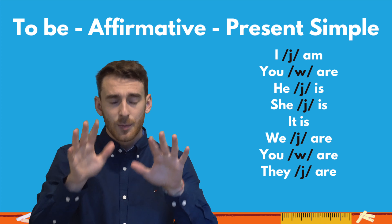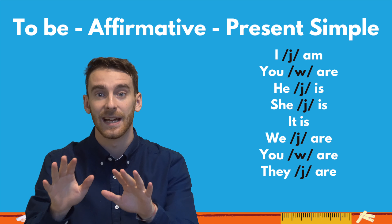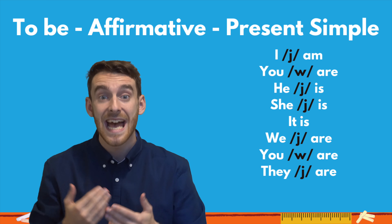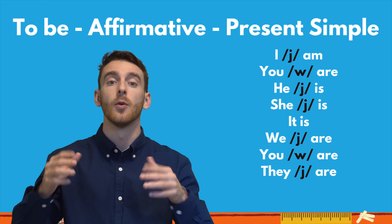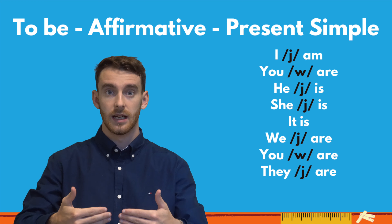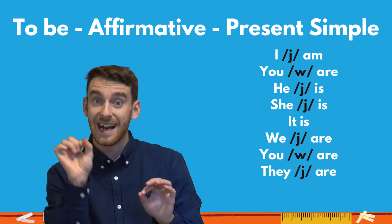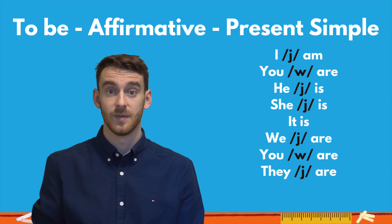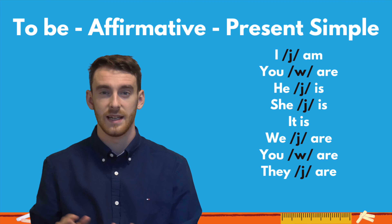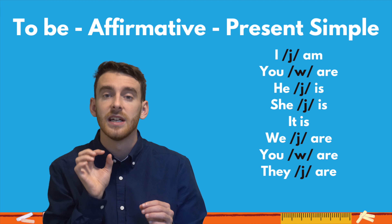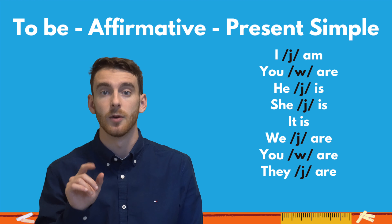So repeat after me, okay? Not 'hi ham' — that's a common mistake. We don't want the H sound. Not 'hi ham.' I am. So between the I and 'am,' there's a little Y glide. I — y, y, y — am. Not 'I ham,' but a little Y: I am. Okay, I am.